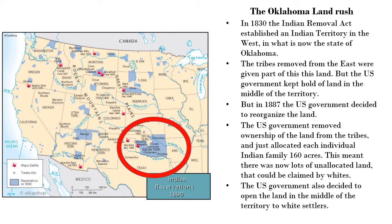The US government also decided to open the land in the middle of the territory to white settlers. Basically, in 1887, the US government looked at the Indian territories, saw how vast and valuable that land was, and then passed acts to take the land away from the Native Americans and get a process up and running whereby they could allocate land to white settlers.